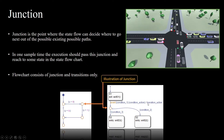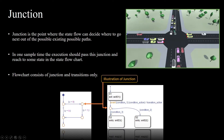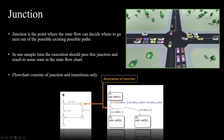The same way happens with stateflow also — the conditions need to be satisfied, then only it will reach these junctions. Some of the basic ideas and principles of junctions: a junction is a point where stateflow can decide where to go next and what the possible existing path is. It will reach the junction and decide based on priority and conditions. This is priority one and this is priority two of the junction's transitions.